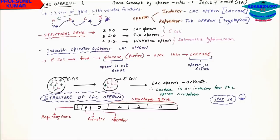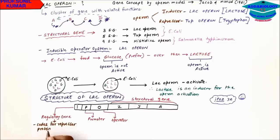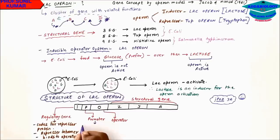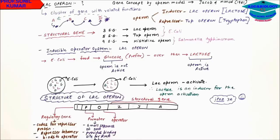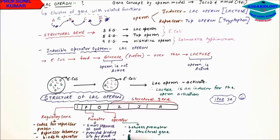In the sequence IPOZYA: I is the regulatory gene, P is the promoter, O is the operator, and Z, Y, A are all structural genes — there are three structural genes in lac operon. The regulatory gene codes for a repressor protein, which forms a tetramer and binds to the operator. The promoter is a small sequence of DNA that provides a binding site for RNA polymerase and is always present at the 5-prime end. The operator is a gene present between the promoter and the structural genes, and it provides the binding site for the repressor tetramer.